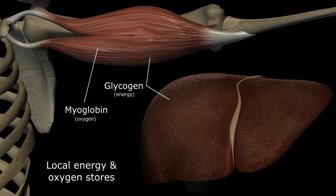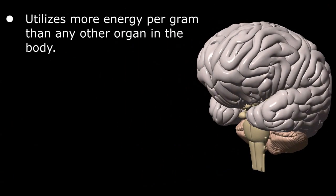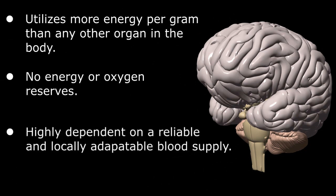However, the brain, which utilizes more energy per gram than any other organ in our body, has no such reserve and therefore is highly dependent on a reliable and locally adaptable blood supply.